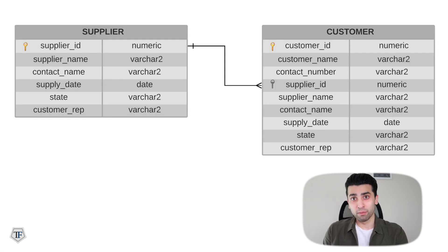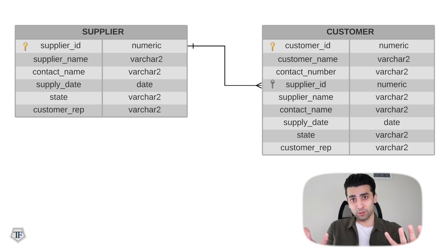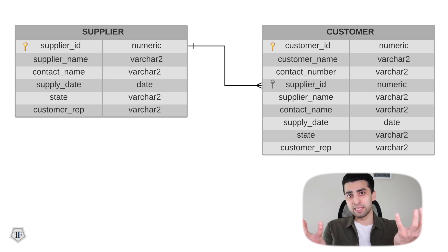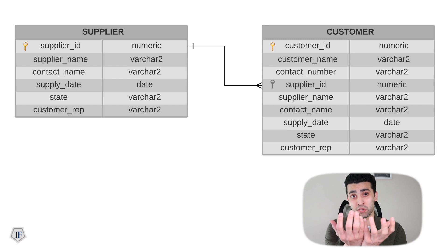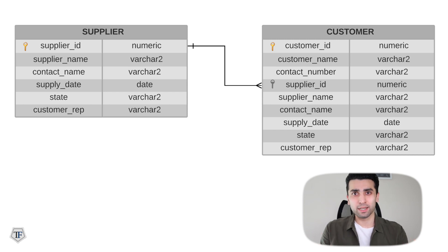You might have also heard the term foreign key. For example, if I have two tables — supplier and customer — supplier has a primary key which is supplier_id. Now this supplier has sold something to this customer, which sits in the customer table. The customer table also has a primary key which is customer_id. But it would also have a foreign key, which is supplier_id, because that links these two tables together. That supplier_id was the primary key for the supplier table, but it also exists in the customer table — so we can join these two tables. That's why supplier_id in that table is a foreign key.